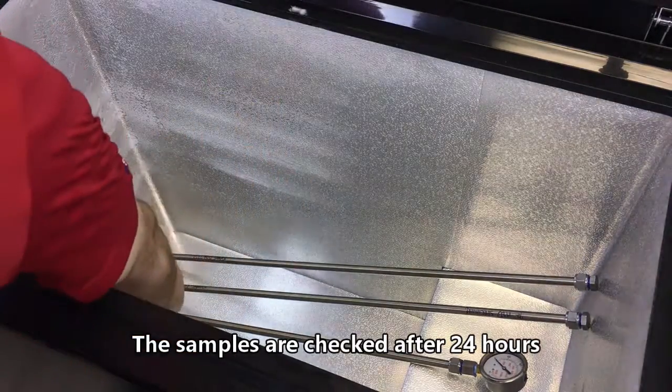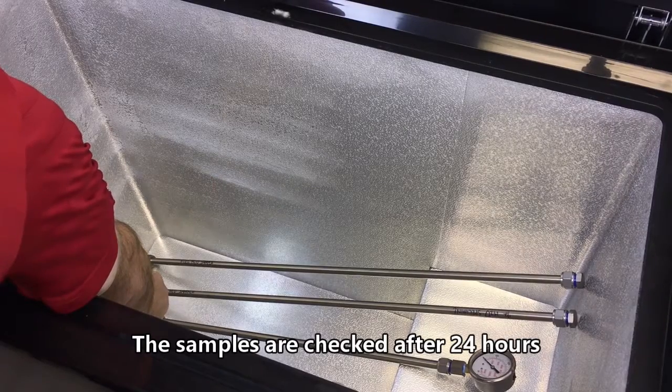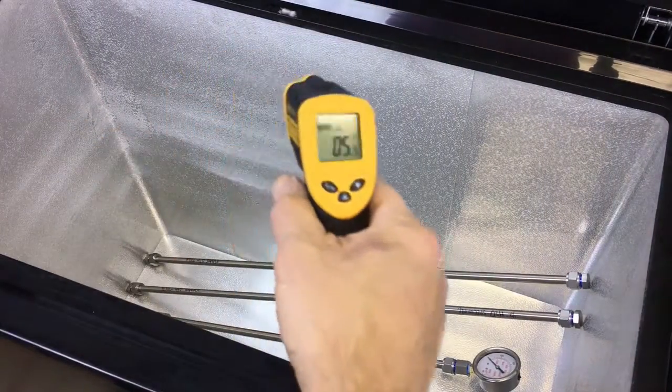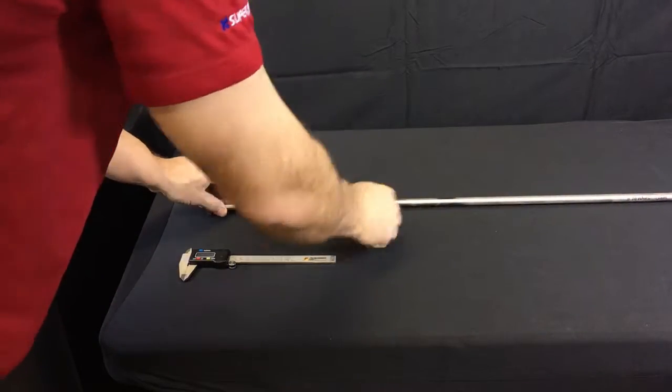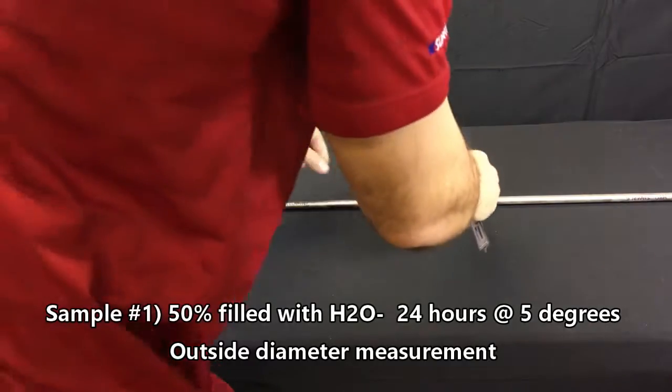After 24 hours, the tube samples are examined. Calipers are used here to check for changes in the outside diameter of the tubing.